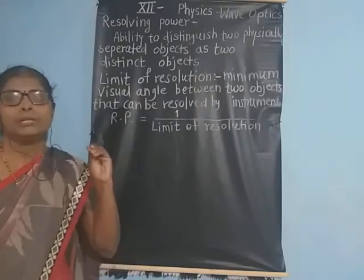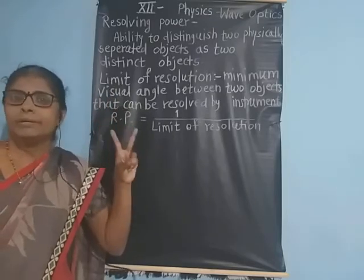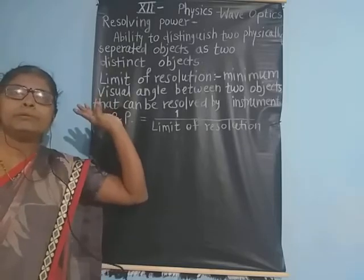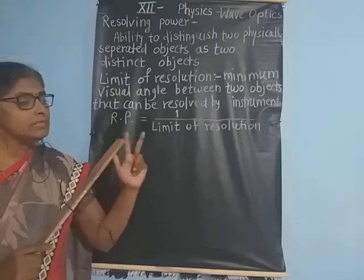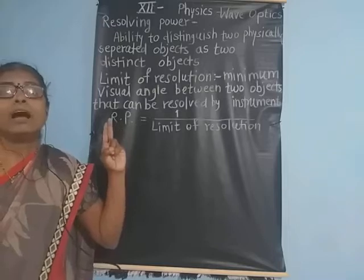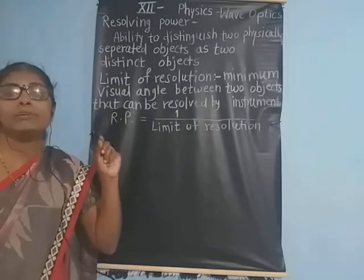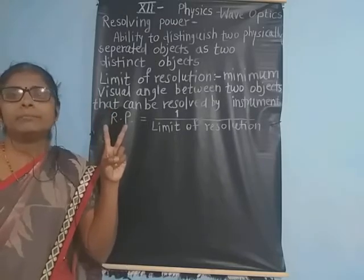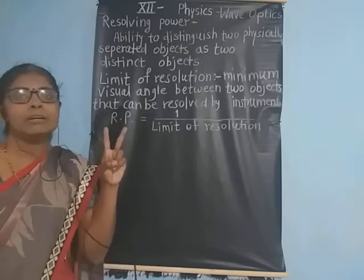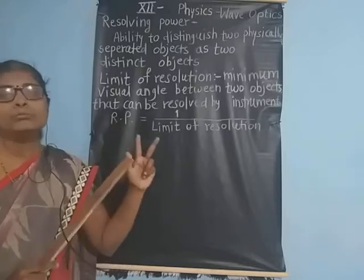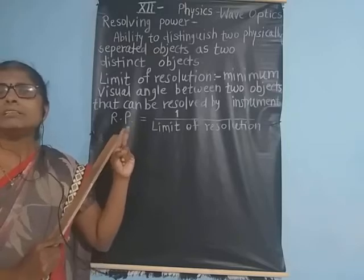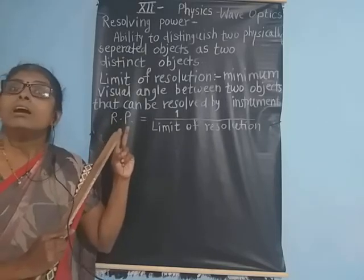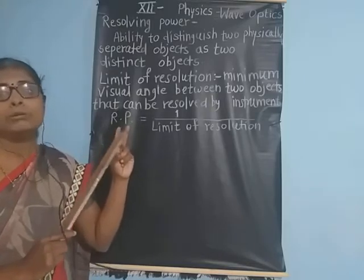Suppose your friend is showing a victory sign — two fingers up — at a 10-metre distance. We can easily observe the two fingers. But as we go on increasing the distance from 10 metres to 50 metres and above, the separation between the two fingers we can't see. We see just one finger and can't identify both fingers. This ability to distinguish them is called resolving power.